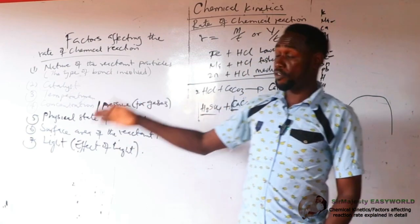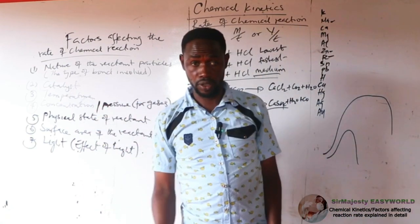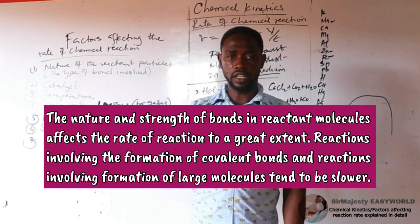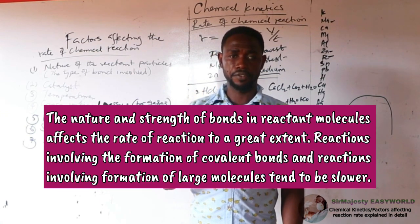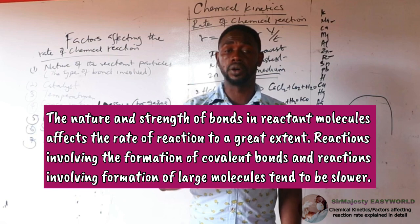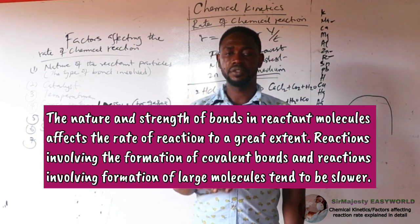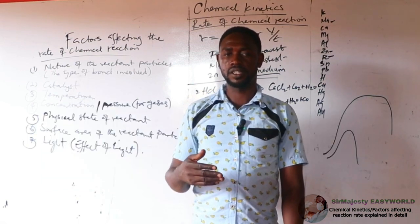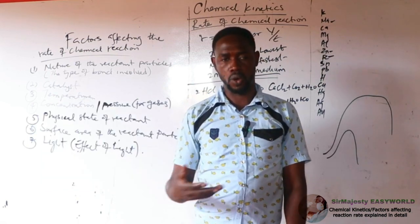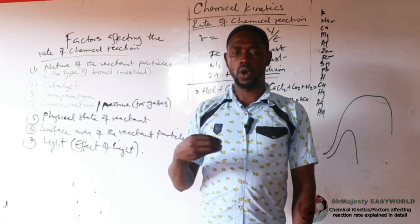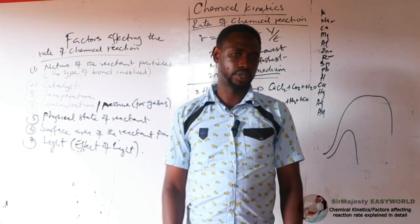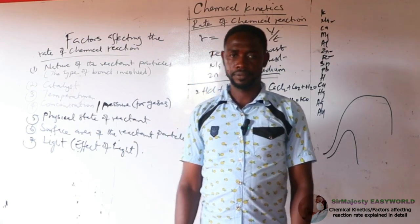That is it for the nature of reactant. Another aspect to consider is the type of bond involved. Reactions that involve the formation of covalent bonds have a relatively slower reaction rate than those involving the formation of ionic bonds.